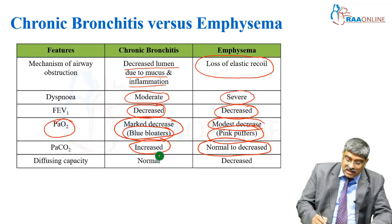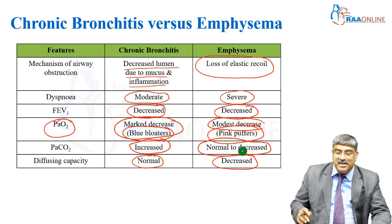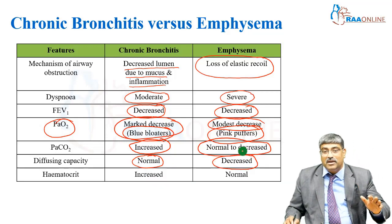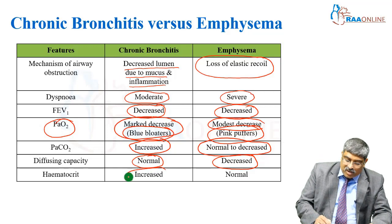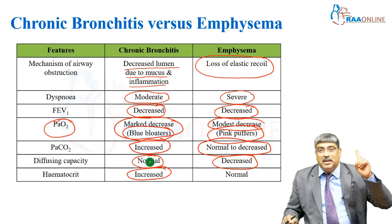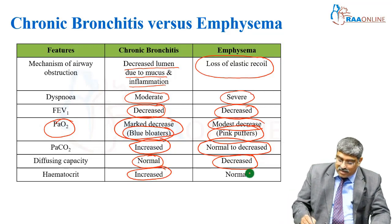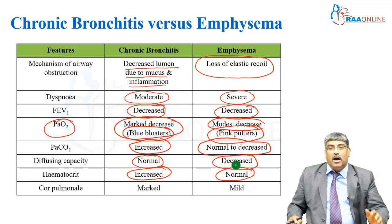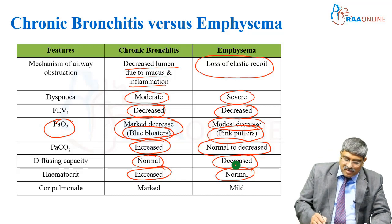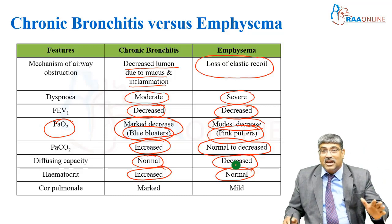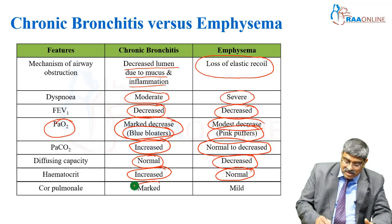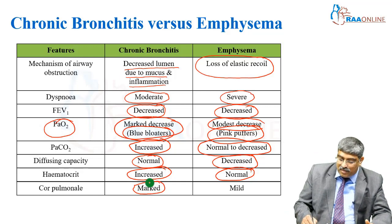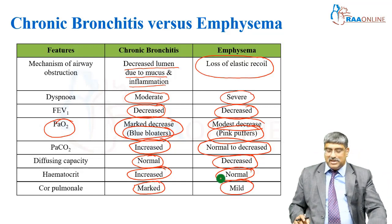Diffusing capacity is normal in chronic bronchitis but it is affected in emphysema. Hematocrit in chronic bronchitis — because of hypoxia the patient might be polycythemic, but in emphysema it may be normal. Cor pulmonale, which is right heart failure secondary to lung disease, is marked in chronic bronchitis and mild in emphysema.